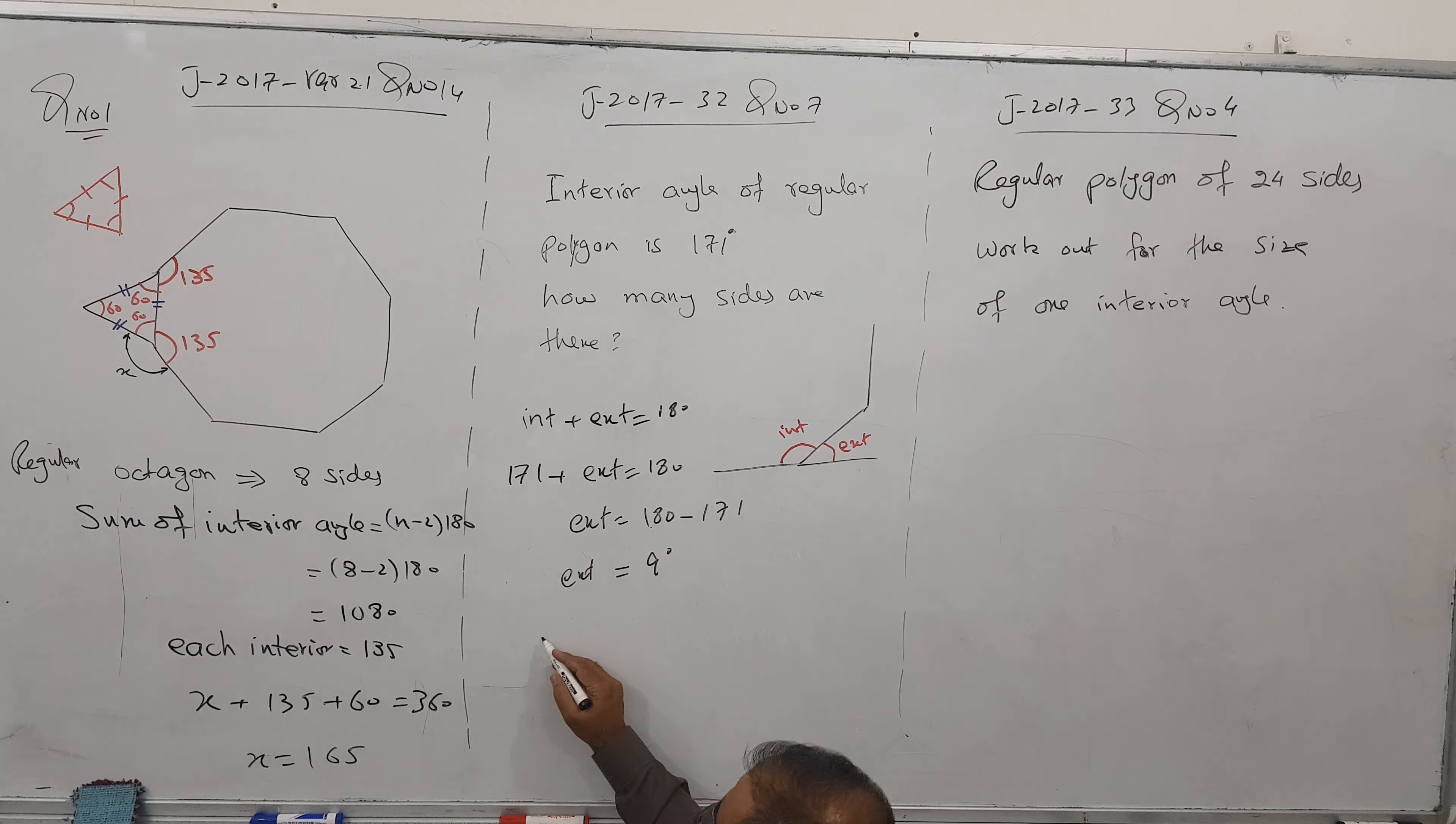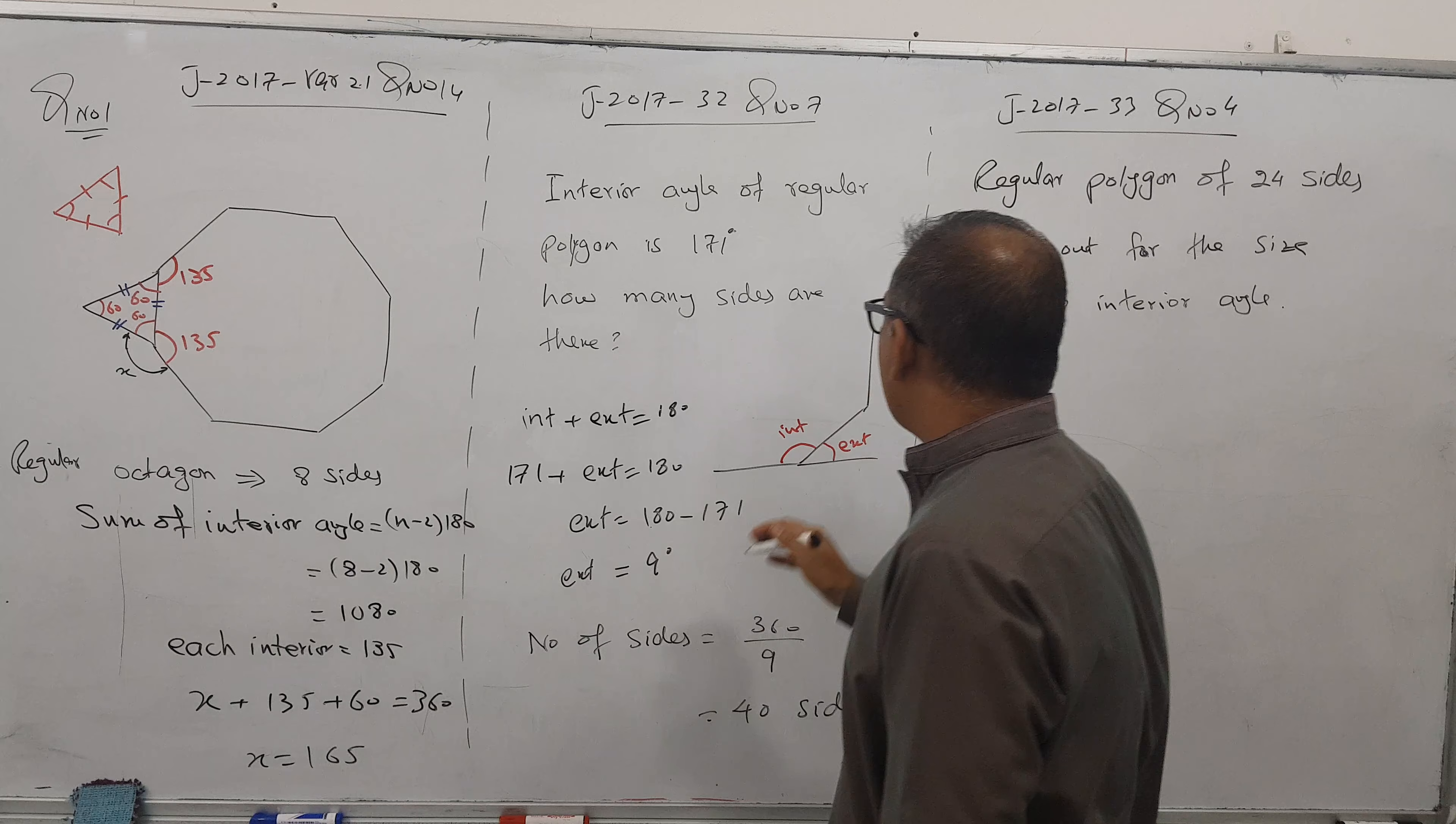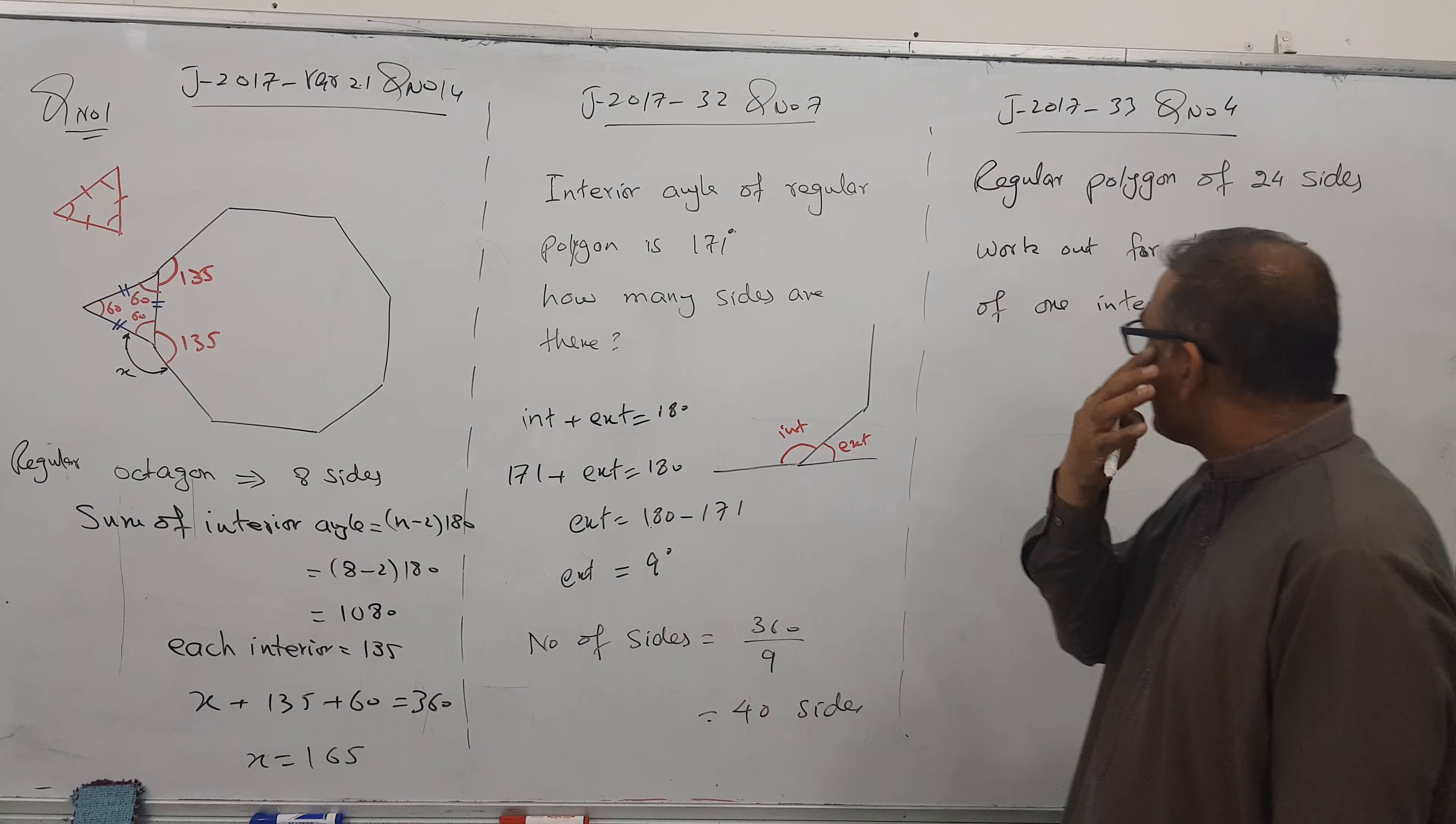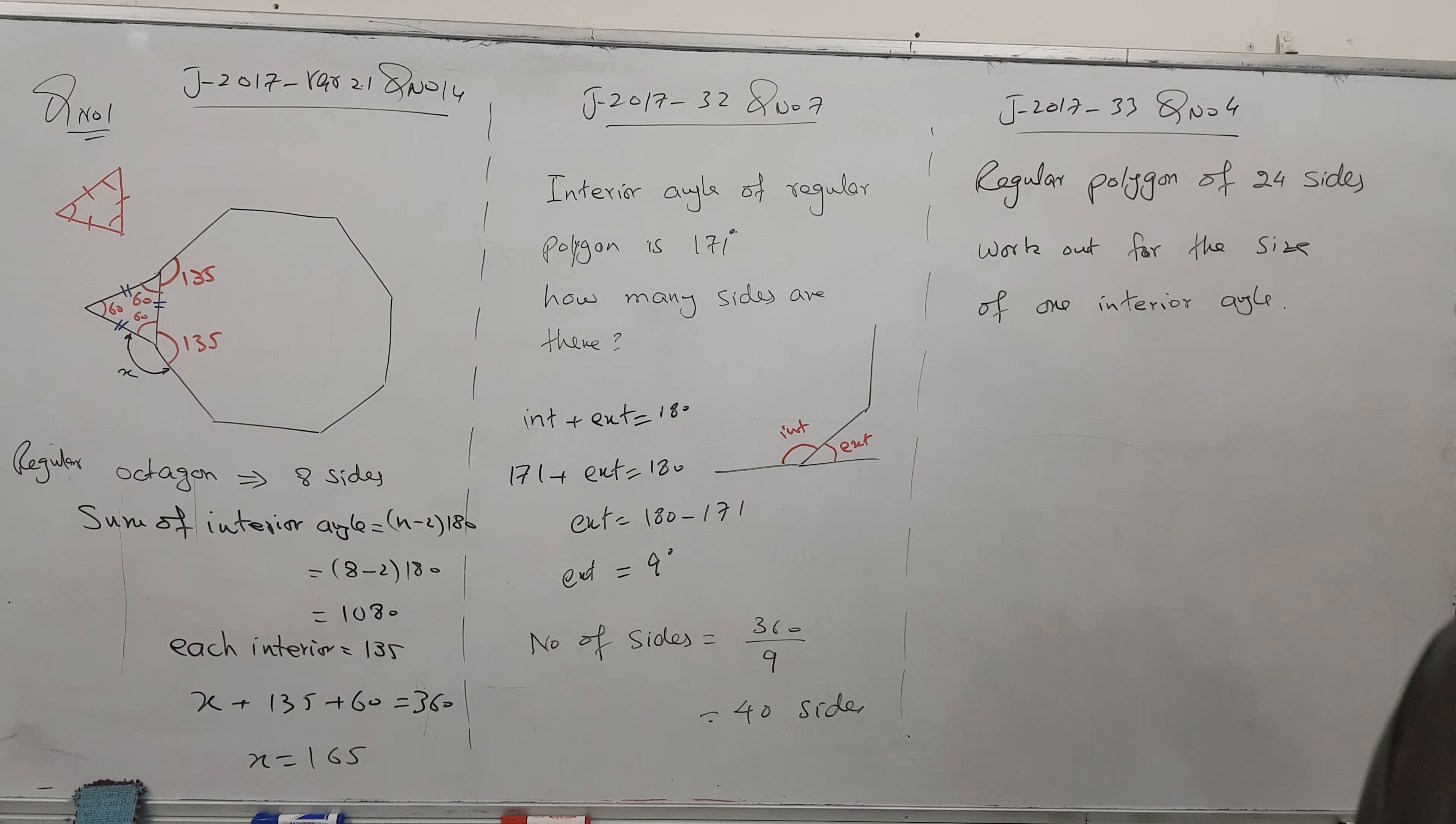How to find number of sides? Formula is 360 divided by the exterior angle. 360 divided by 9 gives us 40 sides. It means if this kind of diagram continues, there are 40 sides. I think the idea is very clear.